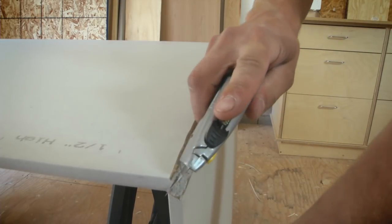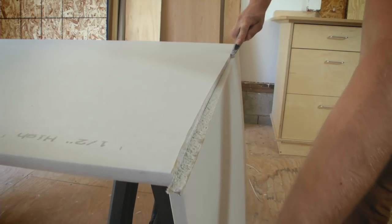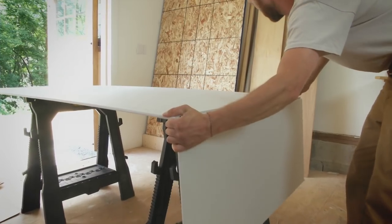Now, run the utility knife along the break, cutting the paper on the back of the drywall, and separating the two halves.